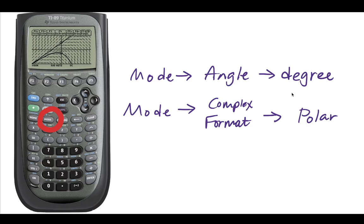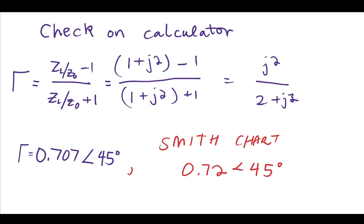So on your calculator, if you have a TI-89, make sure that you're in degrees and polar form. This way, you can enter the number in rectangular format and the output will be in polar degree format. If you do that, you will see that your calculator gives 0.707 angle 45, whereas on our Smith chart, we got 0.72 angle of 45. Looks very close to me, and you can see that if you didn't have a TI-89, this would be a very quick way to do this conversion. Thank you, and see you in the next video.